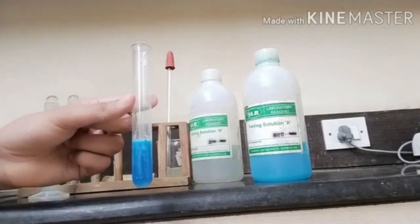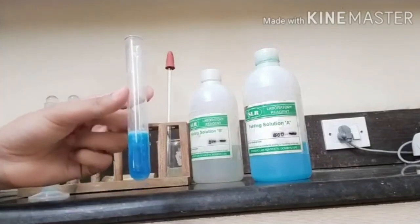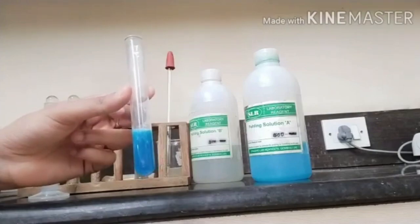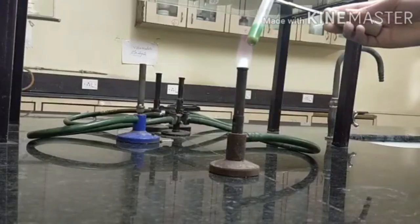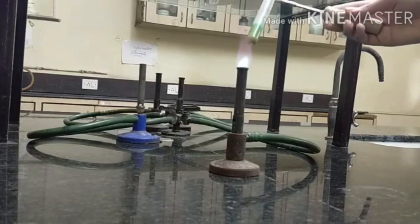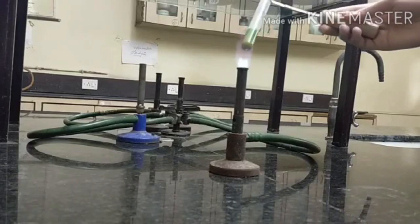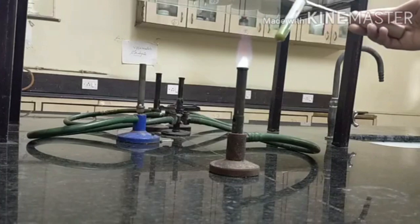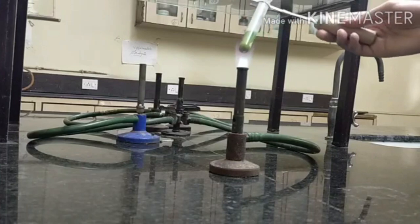This solution we will heat for a few seconds until the color is changed. Start boiling the solution. This test tube contains Fehling A, Fehling B solution and given unknown sample. Now, let's stop and check the reading here.